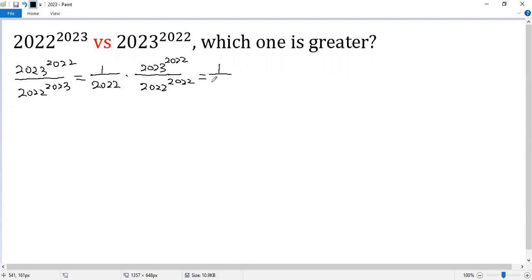we can write this as (1/2022) times (2023/2022)^2022. We can further rewrite as (1/2022) times (1 + 1/2022)^2022.